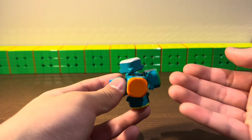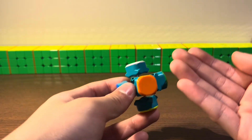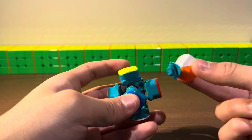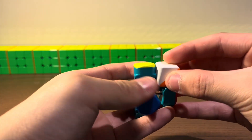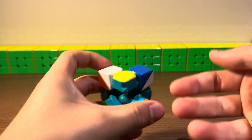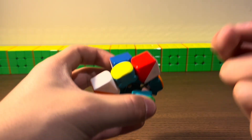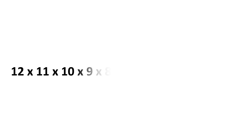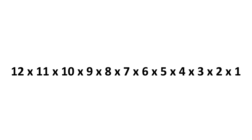Before we do the math, let's first see what happens when we put a piece in. Starting with an edge, there are 12 options. Once we put it in, there are only 11 options for the next edge, then 10, continuing down to 1. So there are 12 × 11 × 10 × 9 × 8 × 7 × 6 × 5 × 4 × 3 × 2 × 1 ways to place the edges, which we can rewrite as 12 factorial.